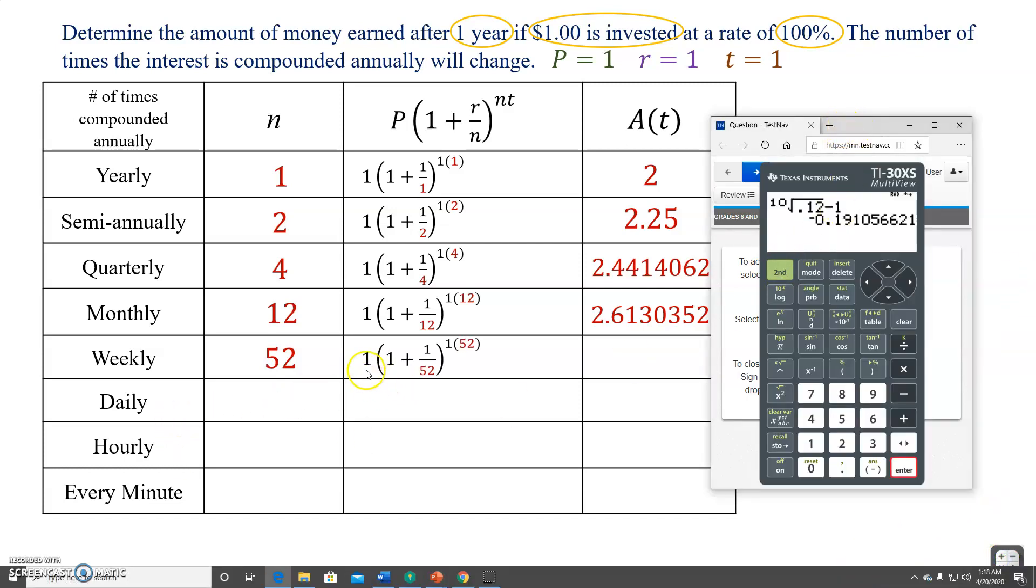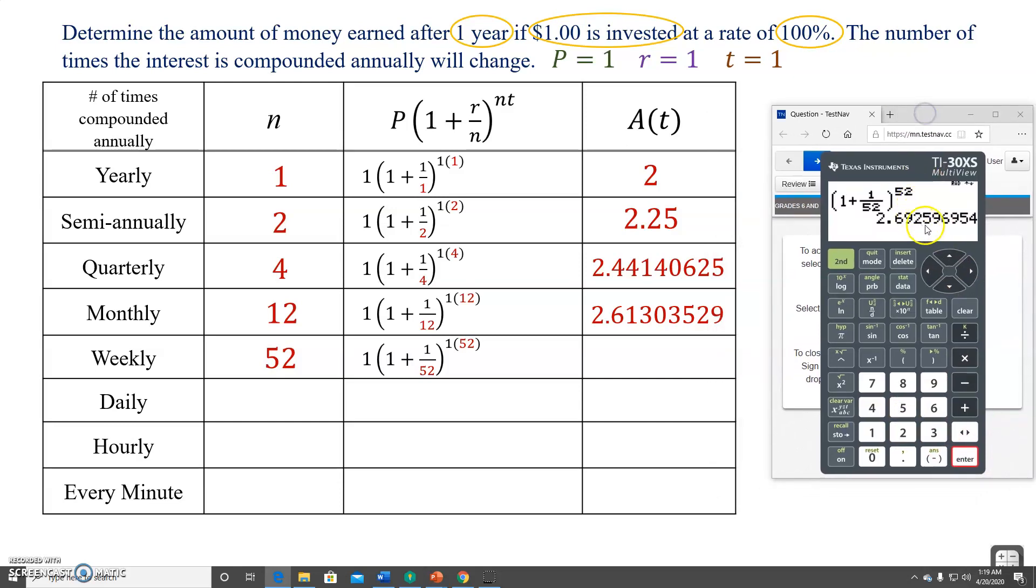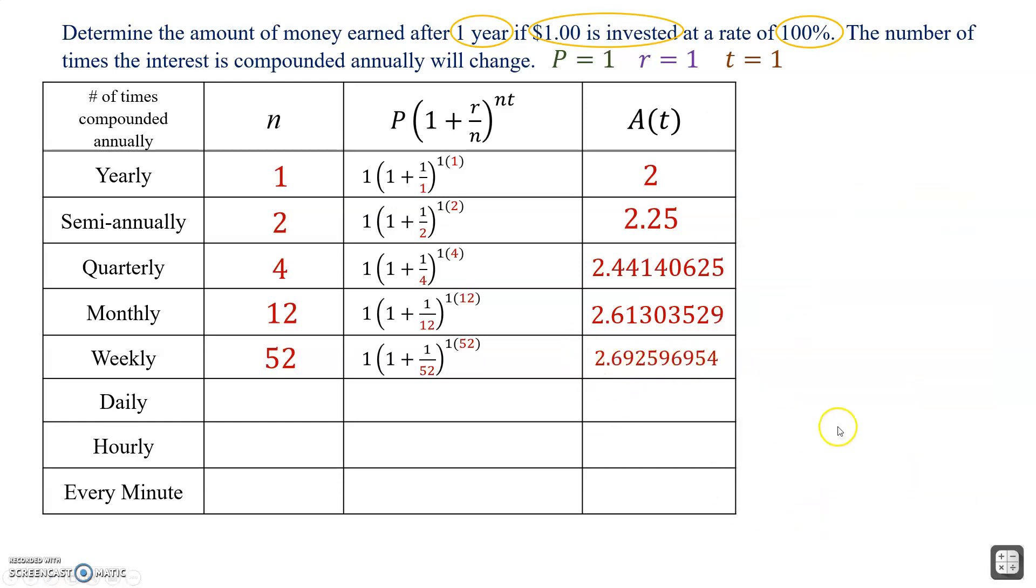Open parenthesis, 1 plus 1 over 52. Move it over. Parenthesis. Raised to the 52. Gives us 2.69259 some stuff. 2.6925 essentially. I continue. 365. Substitute it in. Calculator gives me this number. Hourly. Meaning, there's 8,760 hours in a year. I took the 365 and simply multiplied it by 24. 24 hours in a day. Substitute it into the calculator. Each time I'm getting closer and closer to a particular number.